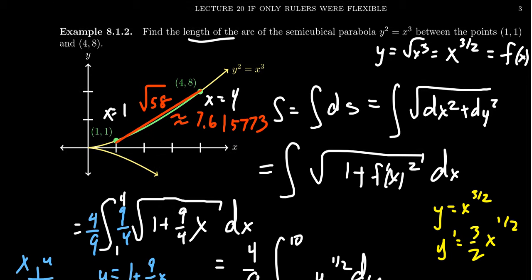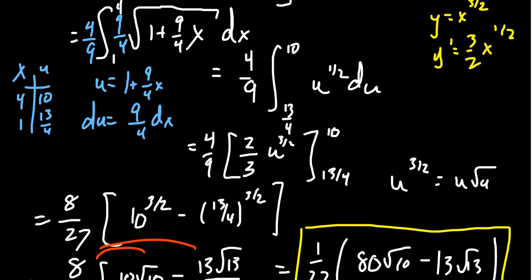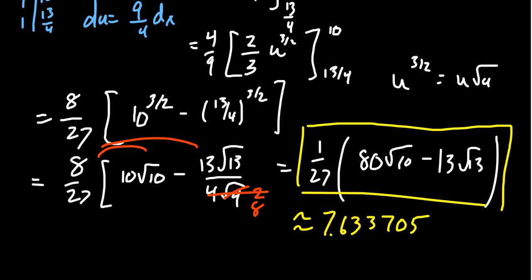If you compare that, this one was also 7.6, this one's a little bit bigger than the square root of 58. And that's because there is this, we are measuring an arc. There's a curve to it. Now, this calculation wasn't so bad.